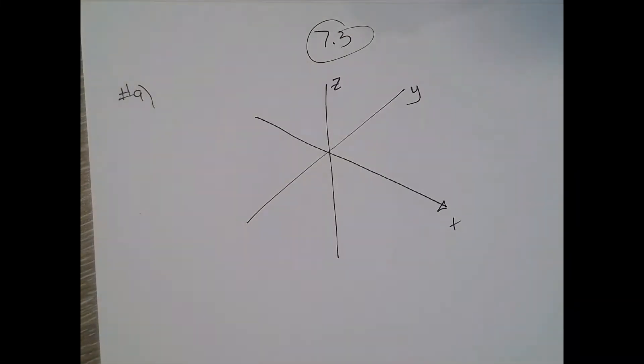7.3 number 9. It's still a cross-section problem. I think it's going to be a little different though, because we're going to integrate with respect to y. So it says the solid lies between planes perpendicular to the y-axis at y equals 0 and y equals 2.